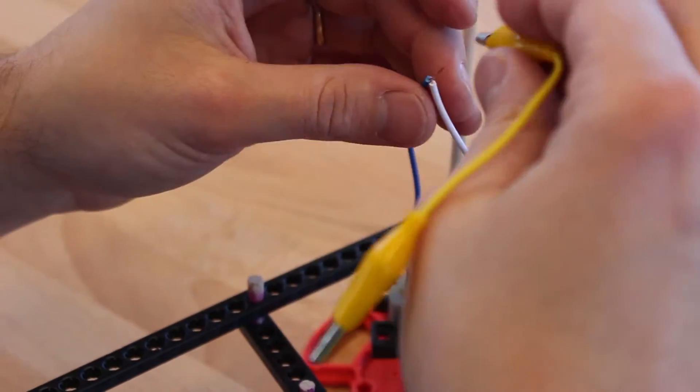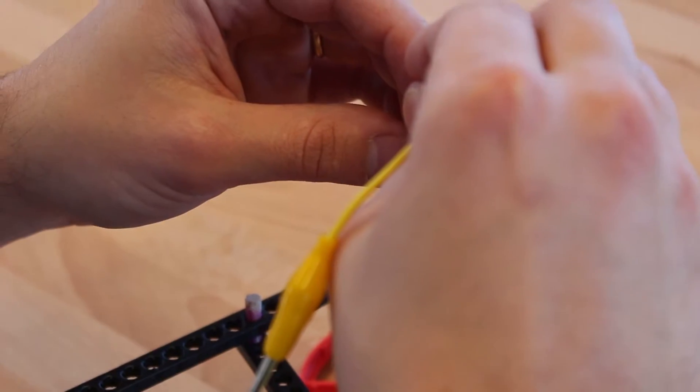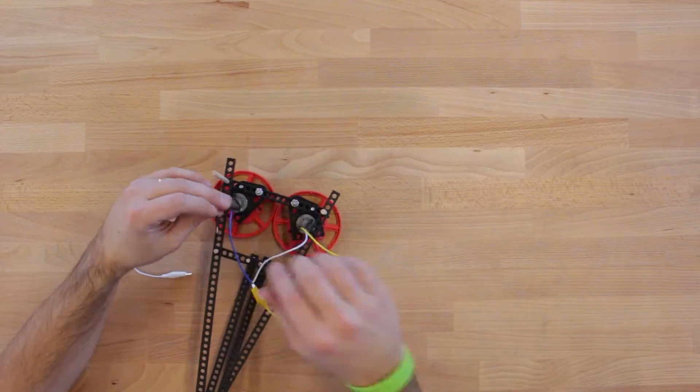Then with one of your alligator clips, clip it on the twisted end of the wire. Repeat this step for the other two wires.